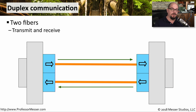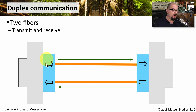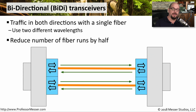A traditional transceiver provides us with duplex communication because there are two interfaces for two fibers on this particular transceiver. One of these connectors might be for transmit, and the other fiber coming in would be for receive. But of course, fiber is relatively expensive to run, and we have a limited number of interfaces on our networking equipment.